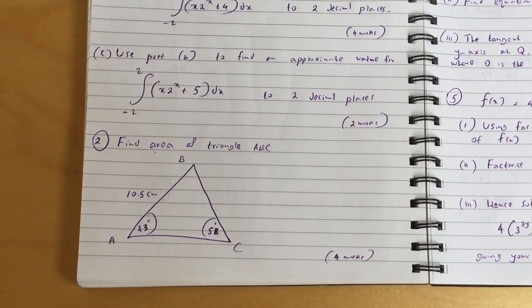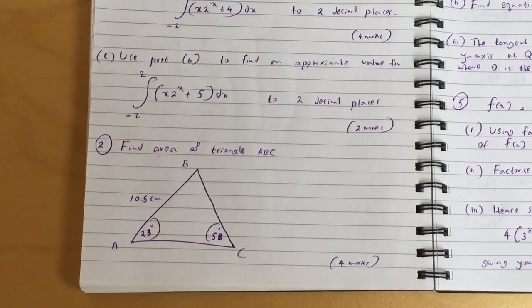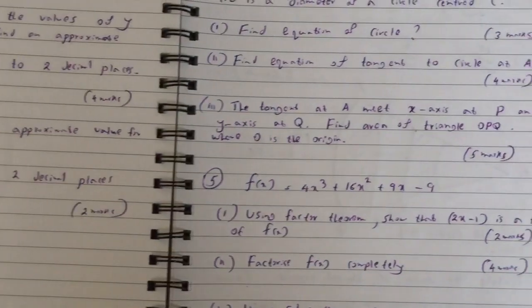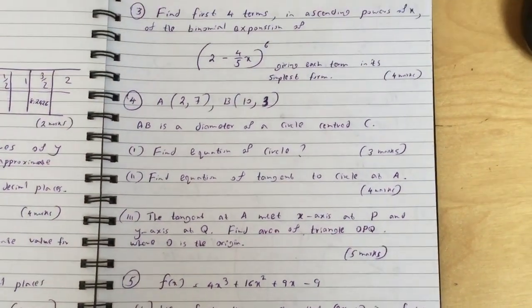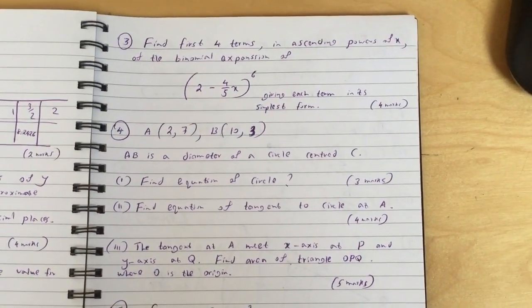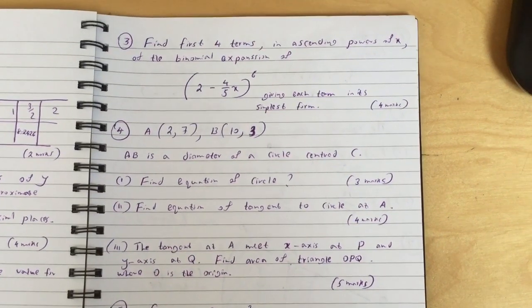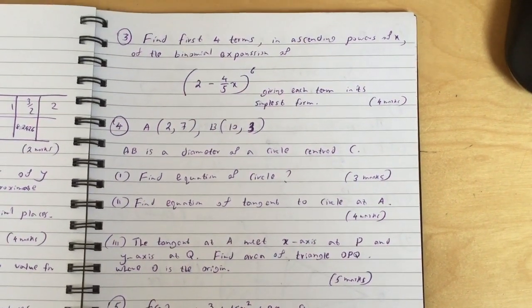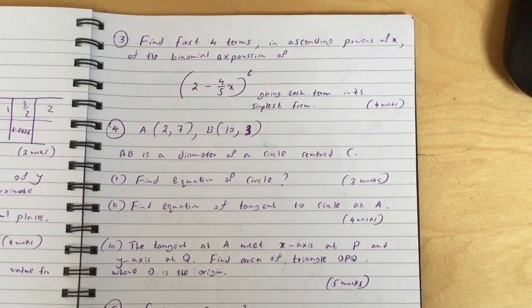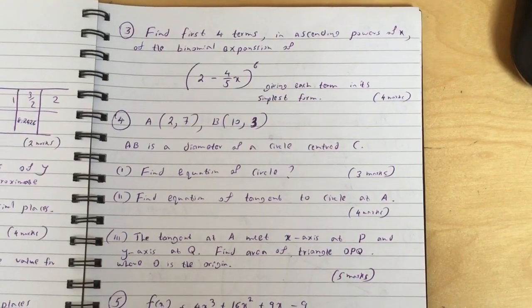Question three: find first four terms in ascending powers of x of the binomial expansion of (2 minus 4/5 x) to the 6, giving each term in its simplest form.